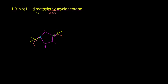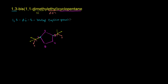Now, if you did this with common naming, instead of this group being called a 1,1-dimethylethyl, you might see that we're connected to a group that has 1, 2, 3, 4 carbons in it, and the carbon we're connected to branches off to three other carbons — it is a tert-butyl. So you could also call this 1,3-di-tert-butylcyclopentane. That would be the common name.